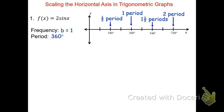Now if we want to label the quarter cycles, we'll take half of the half period. Half of 360 was 180, so half of 180 is going to be 90 degrees. That's a quarter cycle. Each tick mark represents 90 degrees. Adding 90s: 90 plus 90 is 180, that's my half period. 180 plus another 90 would be 270 degrees, which is three quarters of a period. 270 plus 90 is 360, one complete period. And so on: 360 plus 90 is 450 degrees, a cycle and a quarter. 450 plus 90 is 540. 540 plus 90 is 630, which is a cycle and three quarters. And finally 630 plus 90 is 720, two complete periods.